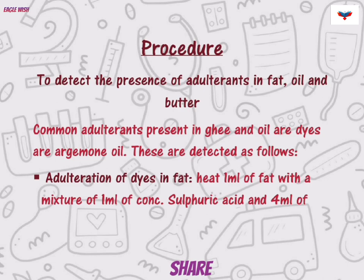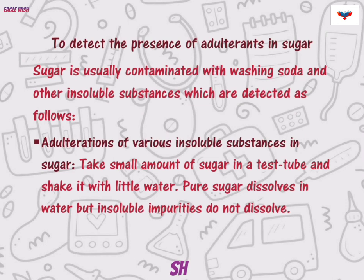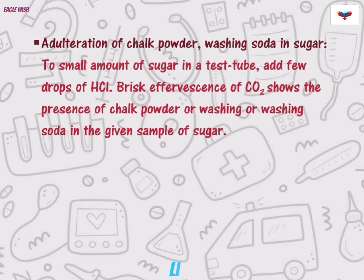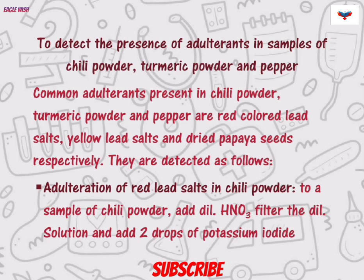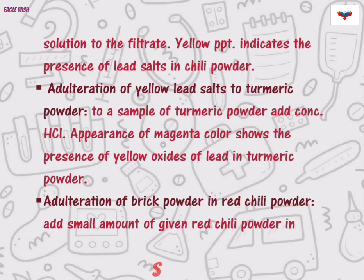Firstly, we will write the procedure of detecting the presence of adulterants in fat, oil and butter. After that, we will write the procedure of detecting the adulterants in sugar. At last, we will write the procedure of detecting the adulterants in samples of chili powder, turmeric powder and pepper.